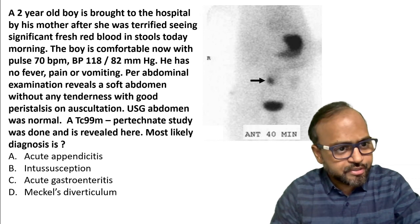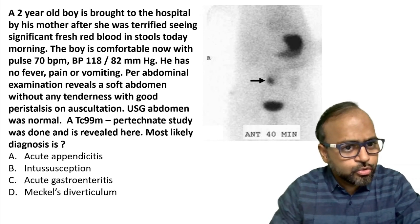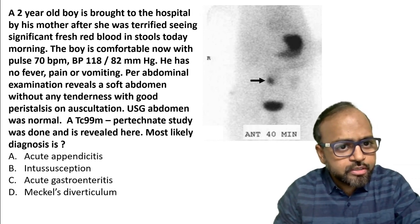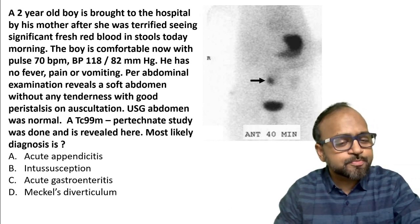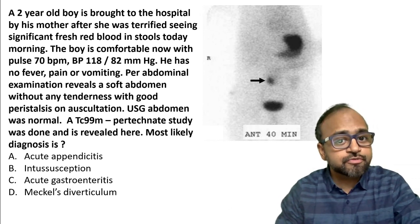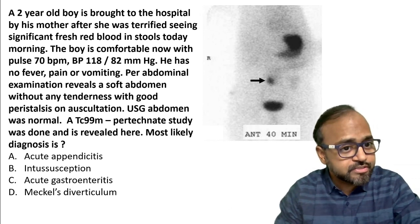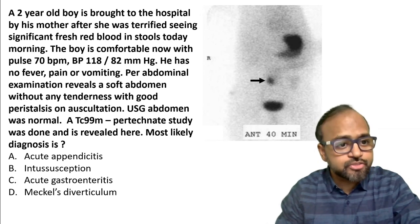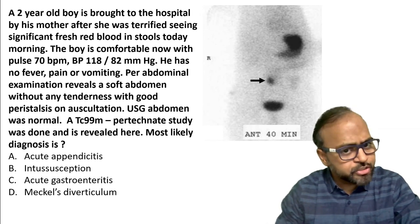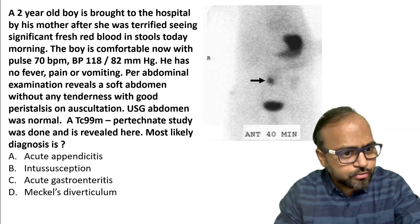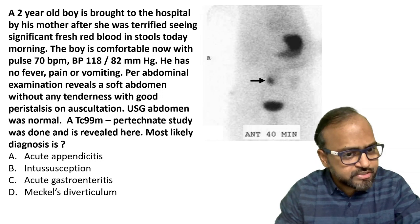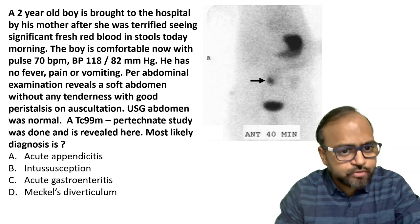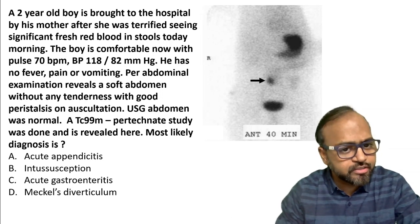Look at this clinical history. A two-year-old boy is brought to the hospital by his mother after she was terrified seeing significant fresh blood in his stools this morning. The boy is comfortable now with a pulse of 70 and blood pressure of 118/82. So pulse is normal, no tachycardia, blood pressure is normal.